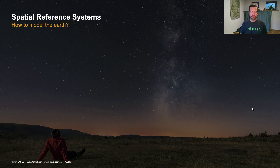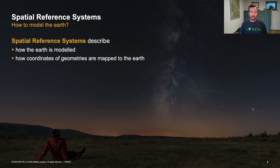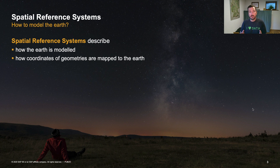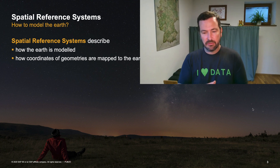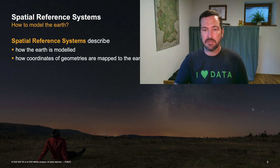One term that you will often come across when dealing with geospatial data is the spatial reference system. What is a spatial reference system? A spatial reference system tells you how to model the earth — how to interpret coordinates that you get and how to map them to a specific point on earth. You may wonder why there are different spatial reference systems, because you will probably be familiar with latitude and longitude. Given latitude and longitude, you'll exactly be able to map one certain point on earth where that location is.